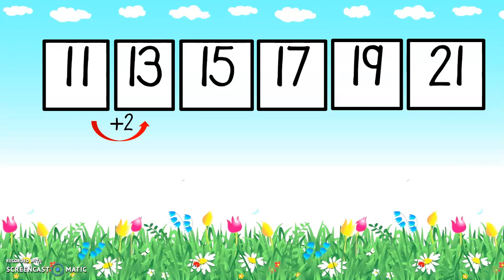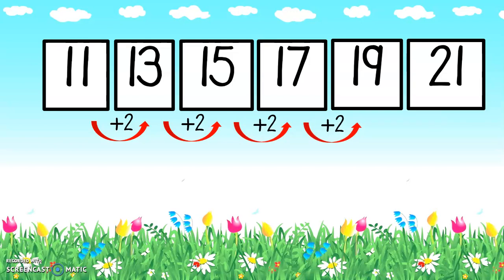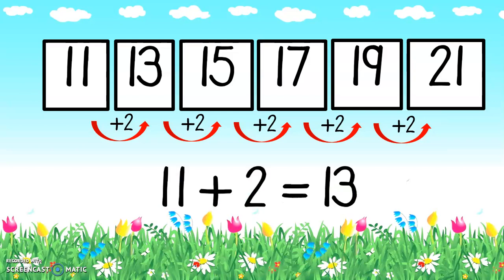When we count in an odd number, we also add two — but now we are just adding twos in odd numbers. So eleven plus two gives me thirteen. If I add another two, it gives me fifteen. Plus another two — seventeen. Another two — nineteen. Plus another two gives me twenty-one. That means my number pattern is counting in twos, but with odd numbers. So eleven plus two gives me thirteen — my number pattern is counting in twos, but with odd numbers.